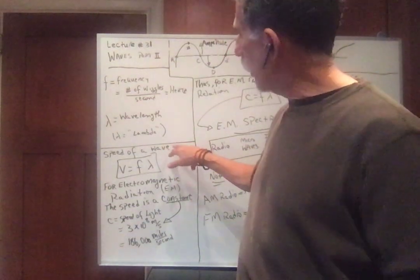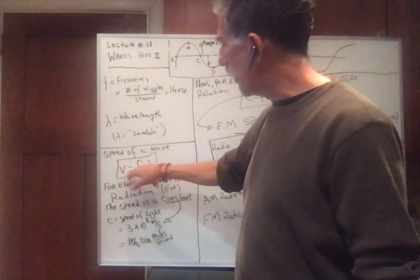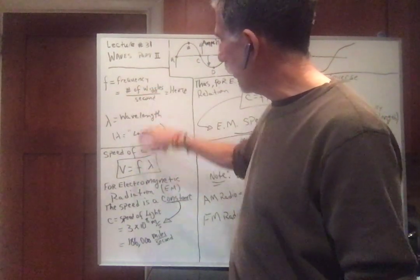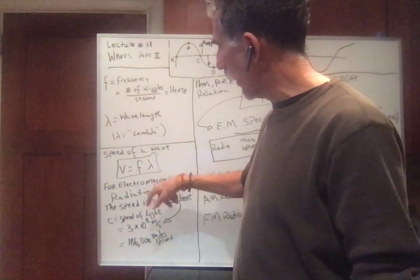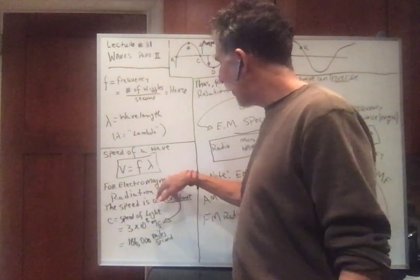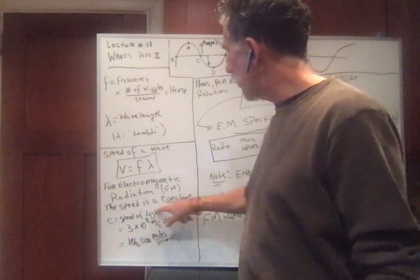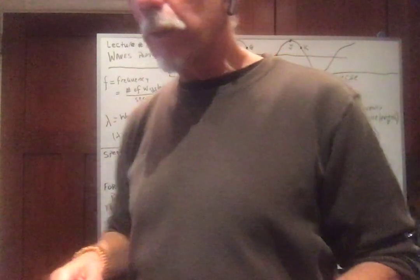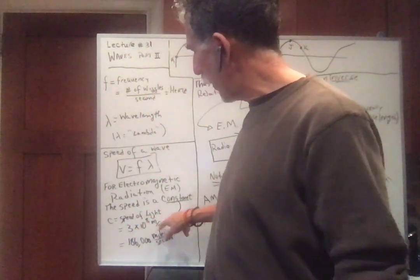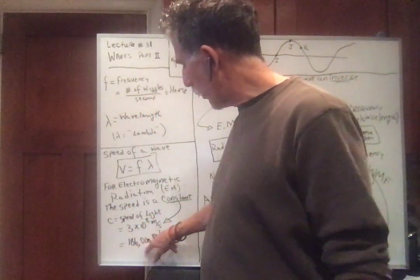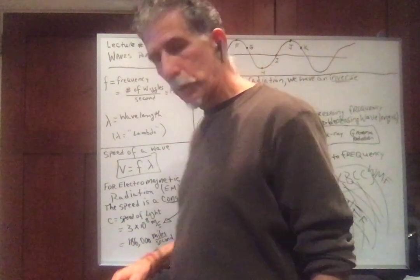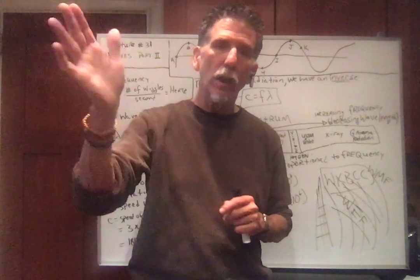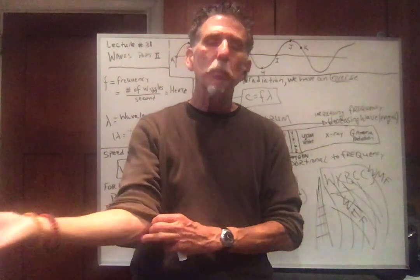In an earlier video, we talked about the speed of a wave is simply the frequency times the wavelength. That's meters over seconds. Number of wiggles has no unit. So meters per second works for electromagnetic radiation. The speed is always c, the speed of light. So all electromagnetic radiation moves at the speed of light, which is three times 10 to the eighth meters per second or 186,000 miles per second.